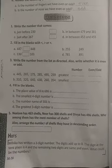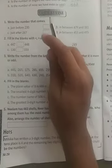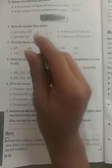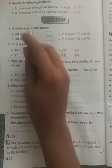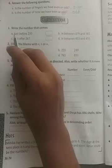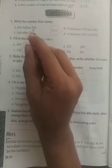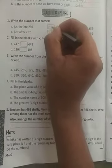Good morning dear students, so today we are going to solve this exercise. Let's revise. I will solve one question and the remaining all you have to solve yourself. Okay, so write the number that comes. Now here, what they've written is just before 230, so which number comes before 230? It is 229.